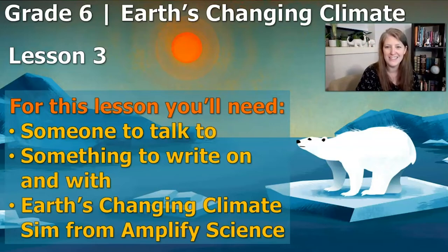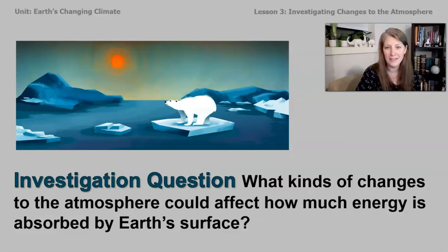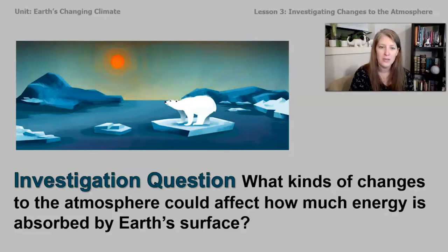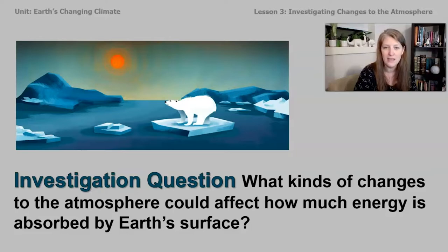All right, let's start this lesson. One possible cause of the current climate change that's happening on our planet right now could be a change in the atmosphere of our planet. We're going to investigate on the sim today. We're going to try a bunch of different gases that are in Earth's atmosphere and see if we can use that information to answer this investigation question: what kinds of changes to the atmosphere could affect how much energy is absorbed by Earth's surface?